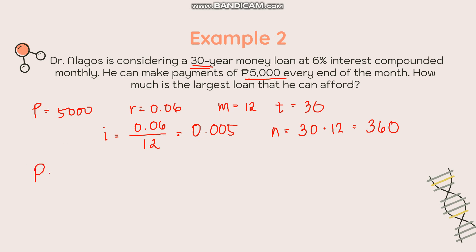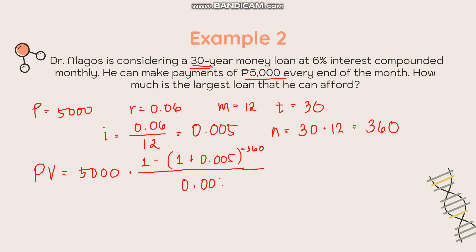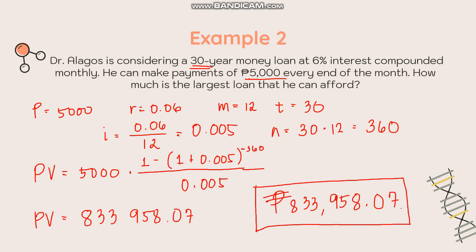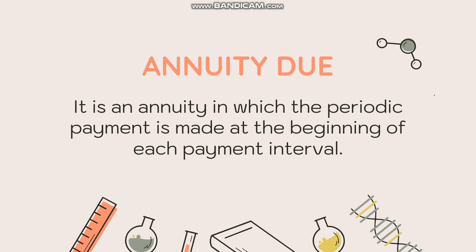Substituting into the present value formula: PV = 5,000 × [1 − (1 + 0.005)^(−360)] / 0.005. Inputting everything into the calculator gives 833,958.07. This means the largest loan Dr. Alagos can afford under this payment method is 833,958.07 pesos.